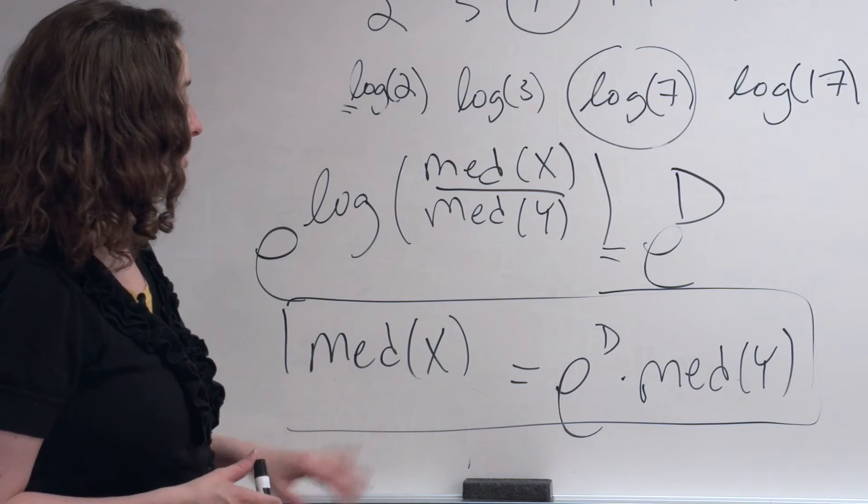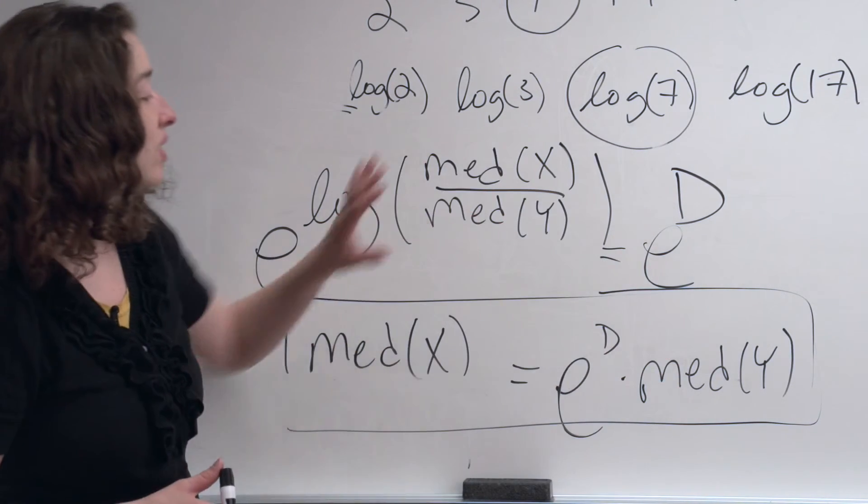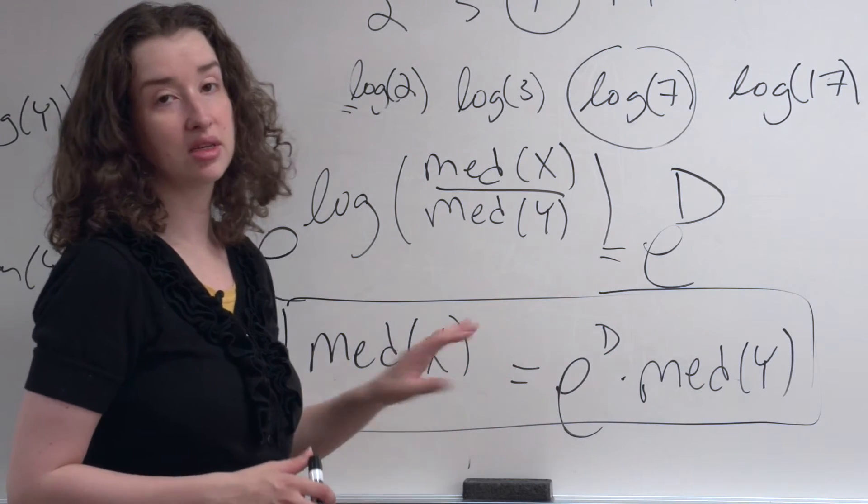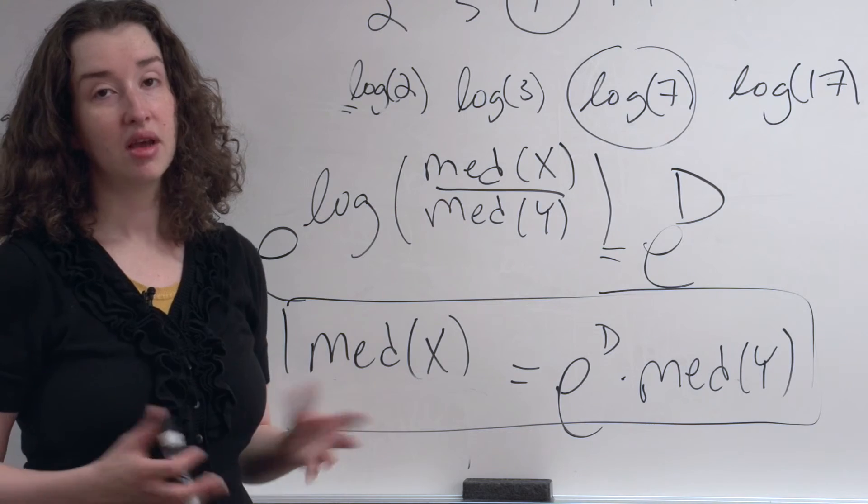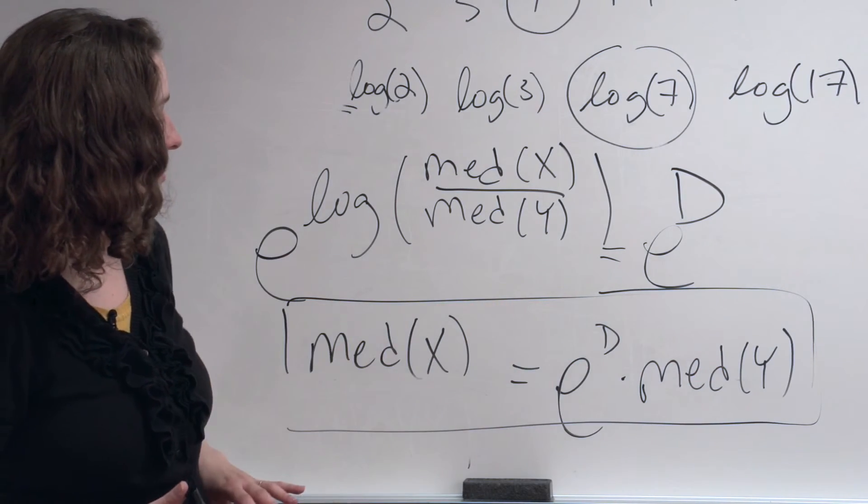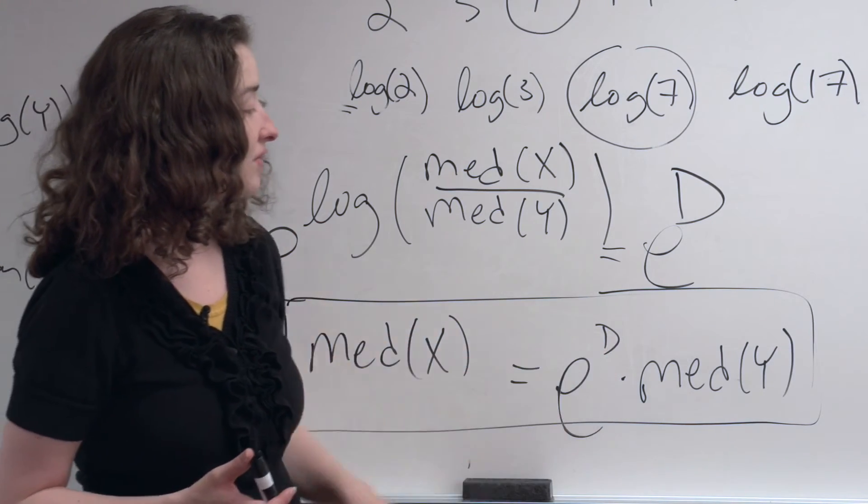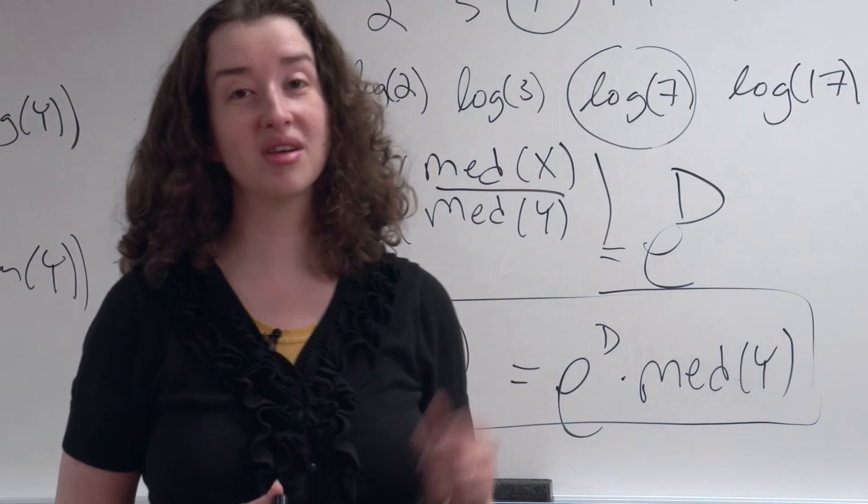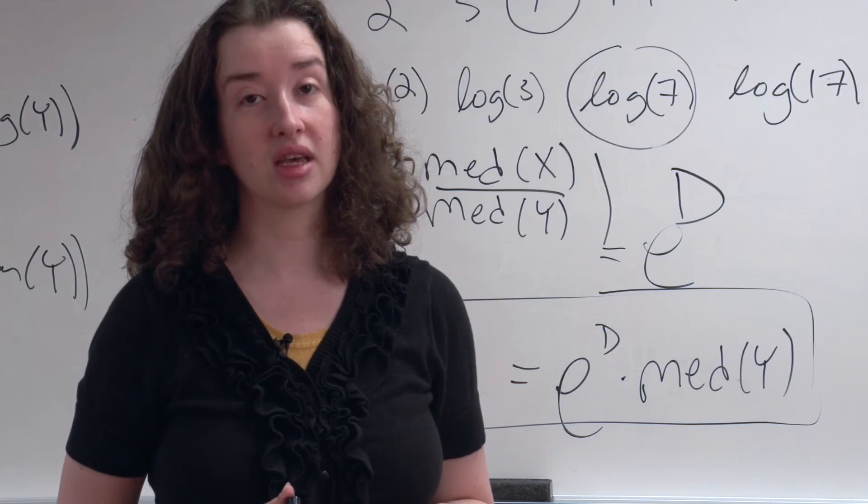And we're no longer talking about the amount we add to one quantity to get to another quantity. Rather, we're talking about the amount we multiply one quantity by to get to the other quantity. And that's fine. That's a perfectly valid result to have. The median income in the Midwest is, for example, five times the median income in the Northeast. I bet that particular number five is not the actual number, but that's how you would interpret a result like this.